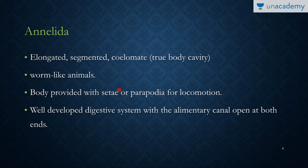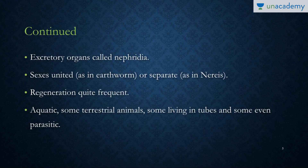They have setae or parapodia for locomotion — setae are present in the earthworm while parapodia are present in Nereis. They also have a well-developed digestive system with both a mouth and an anus. The excretory organs are called nephridia.